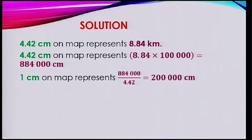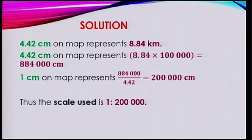Now, 1 cm on the map — you just need to divide it. So that will be 884,000 divided by 4.42, which is 200,000. Thus, we can say that the scale used is 1 is to 200,000.